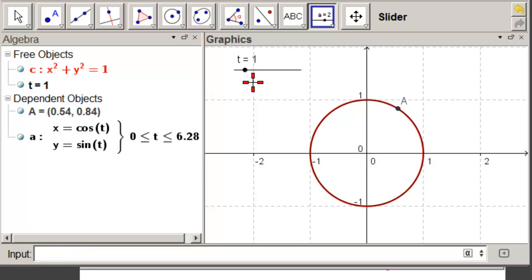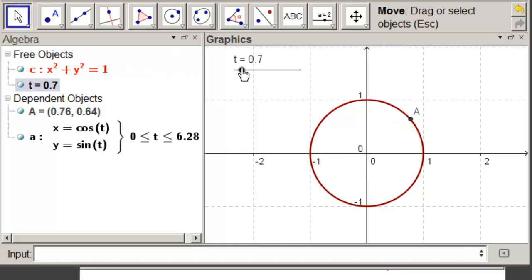T equal to 1, remember, is the radian value because we're going from 0 to 2 pi of this angle here. But the important part is that if we go from t equal to 0, there's our start point, and move our slider all the way around,